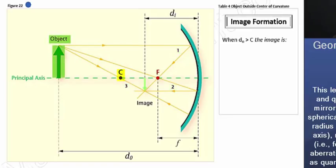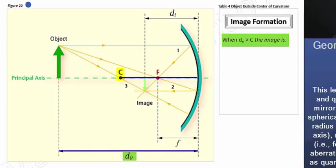In this scenario, the object lays outside the center of curvature. Note the distance of the object from the vertex is greater than the distance of the radius, tapping from the center of curvature to the vertex. And the image is located between the center of curvature and the focal point.